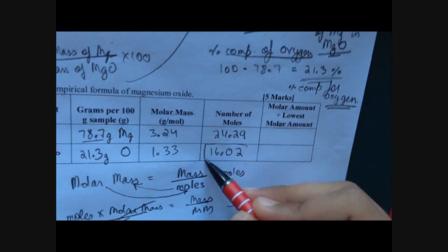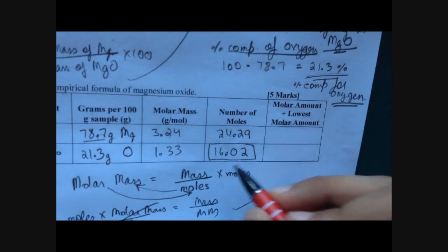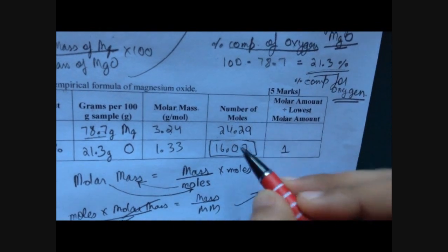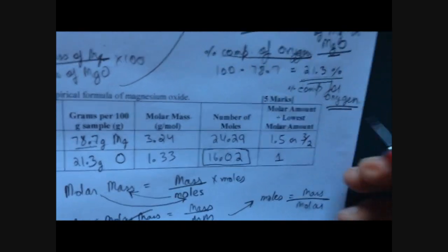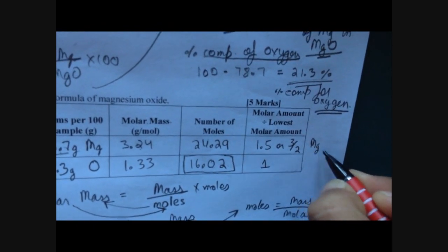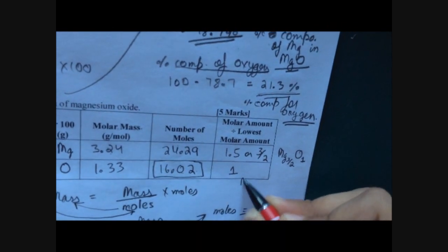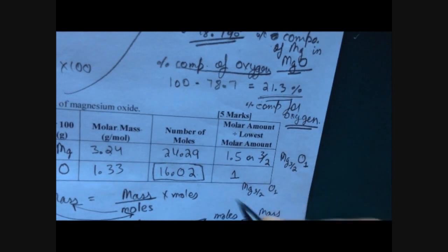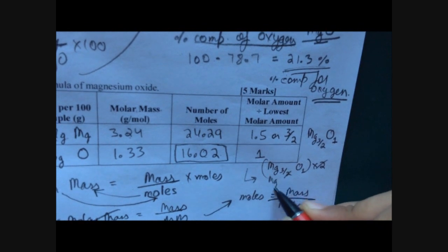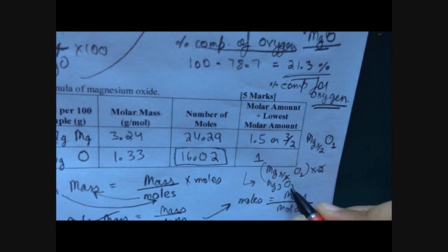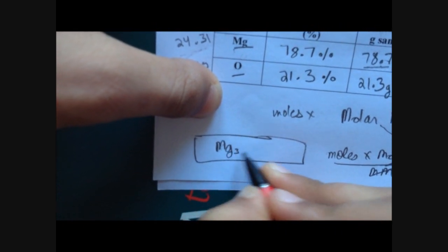Our lowest value is 16.02, so divide both mole values by 16.02. When you divide 16.02 by 16.02 you get 1, and when you divide 24.29 by 16.02 you get 1.5, or 3 over 2. So our empirical formula is Mg(3/2)O1. Since we never use fractions as subscripts, multiply both subscripts by 2 to get Mg3O2.